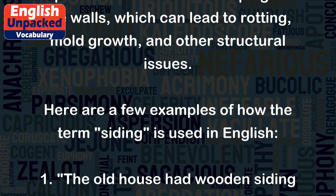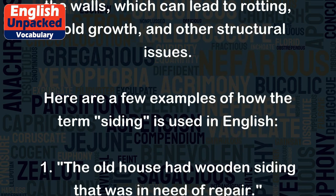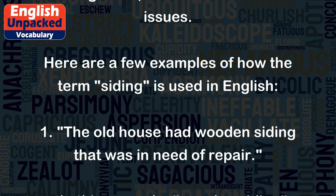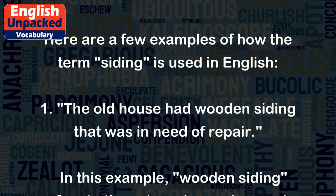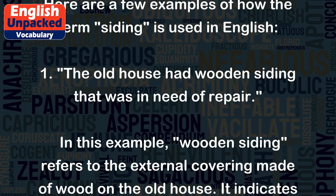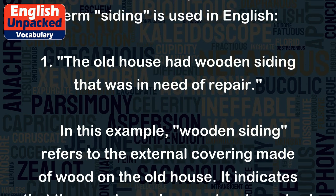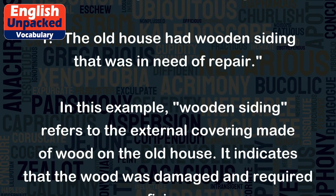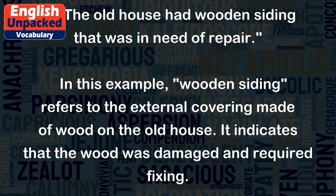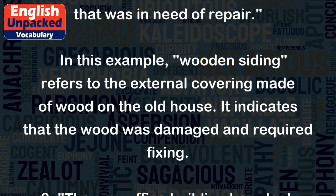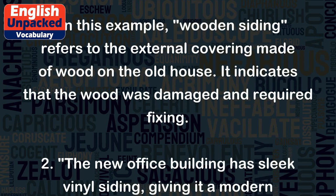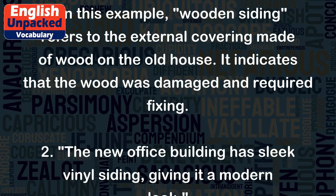Here are a few examples of how the term siding is used in English. 1. The old house had wooden siding that was in need of repair. In this example, wooden siding refers to the external covering made of wood on the old house. It indicates that the wood was damaged and required fixing.